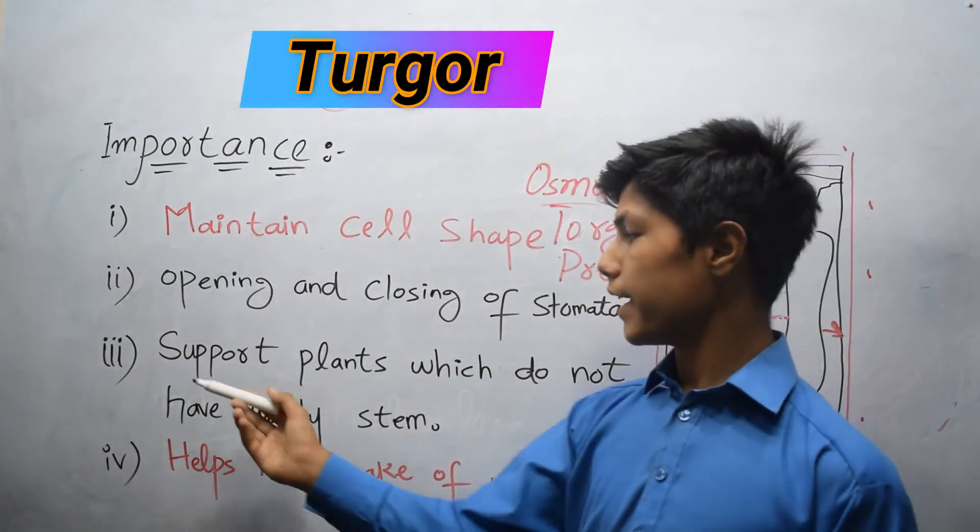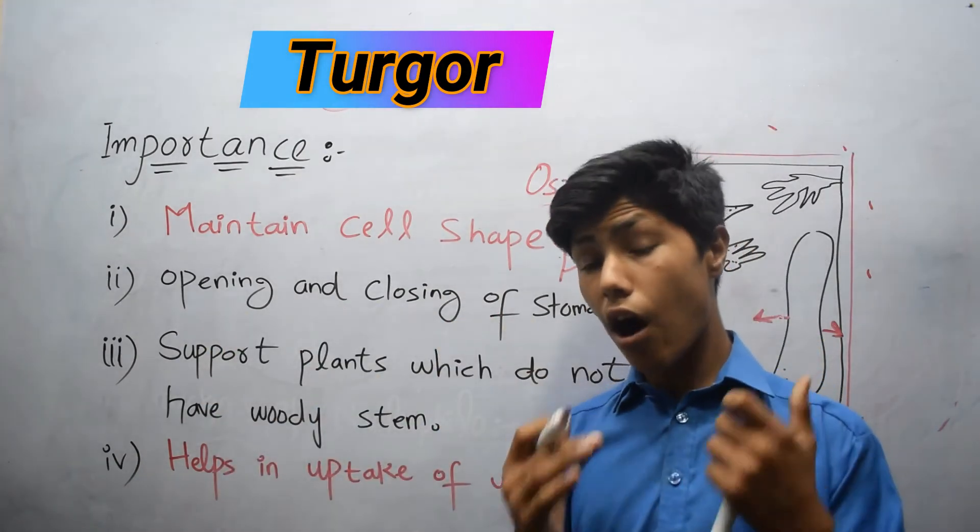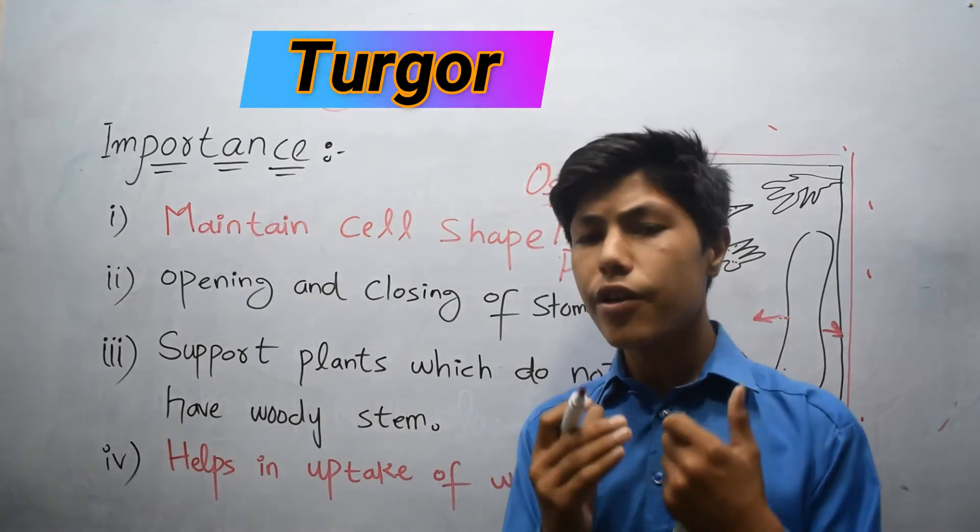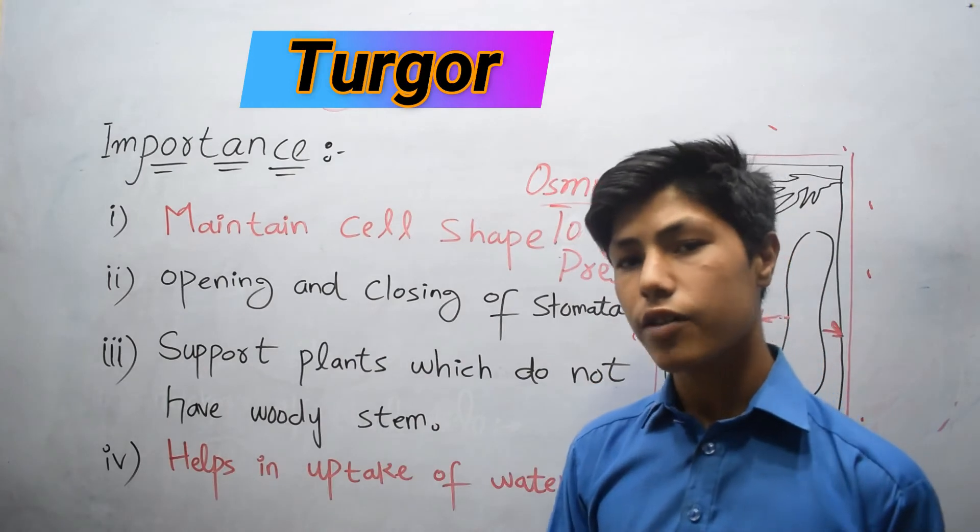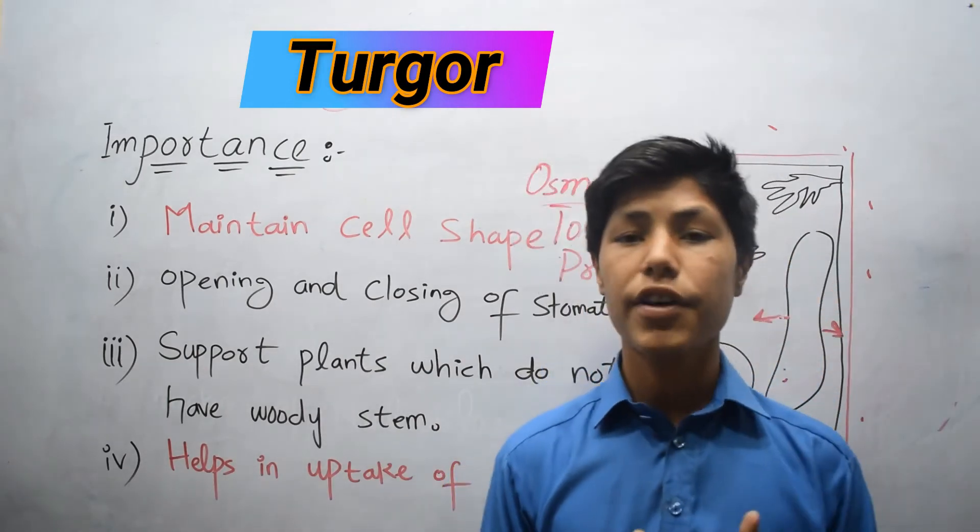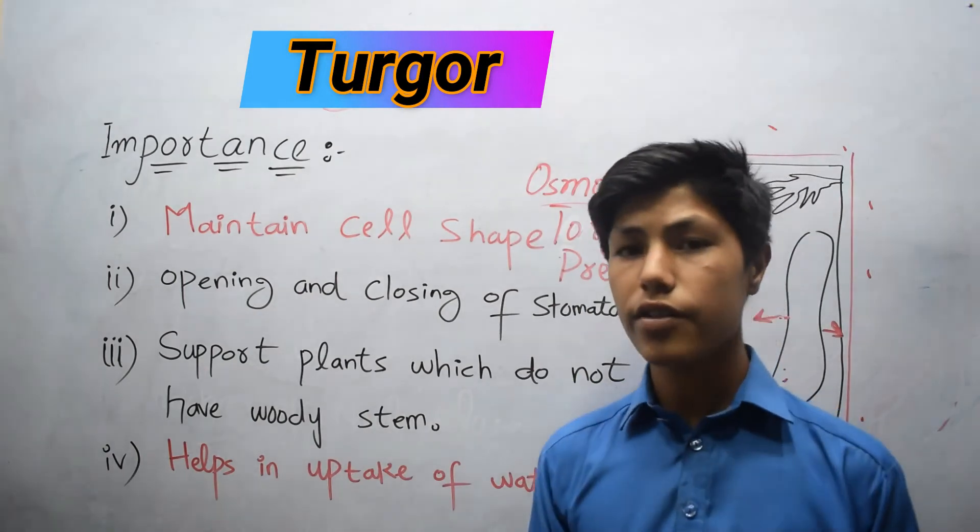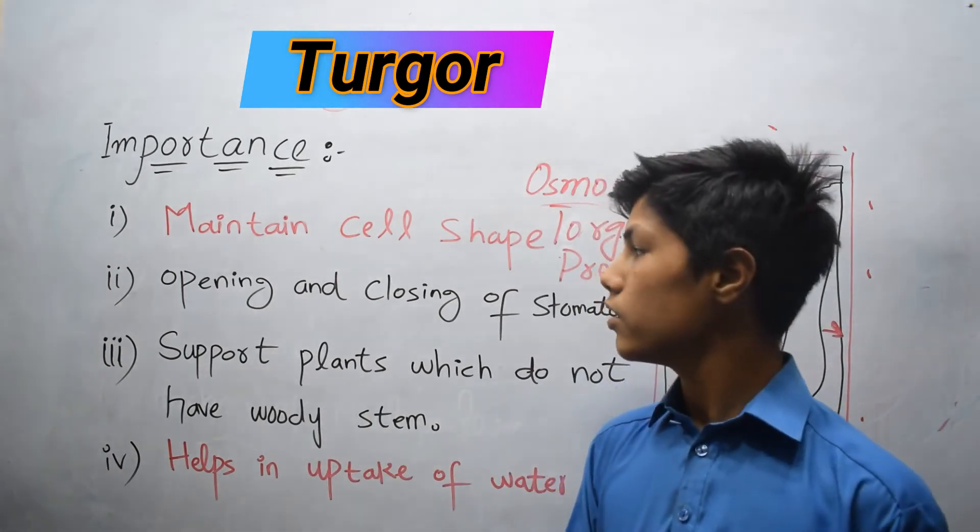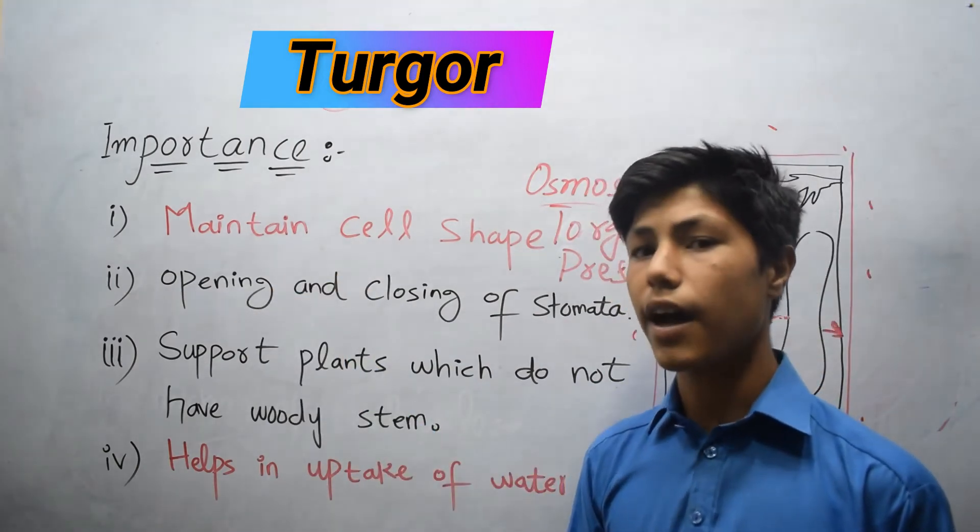The second one is opening and closing of stomata. We all know that when there is high amount of water, stomata can be opened. So if there is a lot of water in vacuole, stomata remain opened. When there is no water, stomata remain closed. So it helps in opening and closing of stomata.